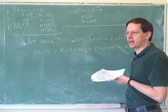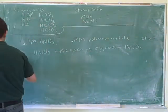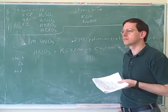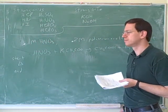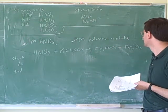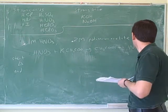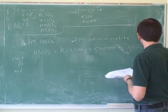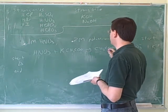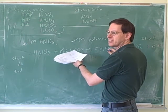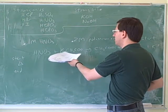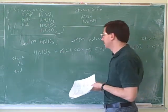And then these would be the remaining spectator ions over here. So KNO3 is the conjugate base? Wait. We would say that nitrate is the conjugate base of nitric acid. And we already knew that acetic acid is the conjugate acid of acetate. The potassium here is best to just think of as a spectator ion. It's not really doing anything.